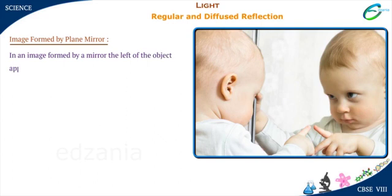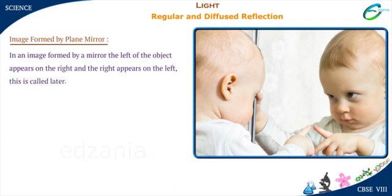In an image formed by a mirror, the left of the object appears on the right and the right appears on the left. This is known as lateral inversion. So, a plane mirror forms a virtual, erect, and laterally inverted image of an object.